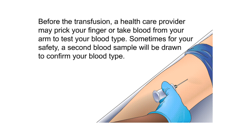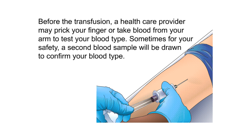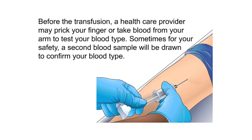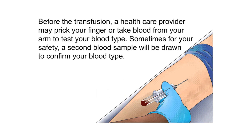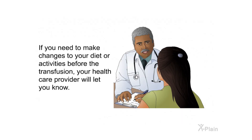Procedure. Before the transfusion, a health care provider may prick your finger or take blood from your arm to test for blood type. Sometimes, for your safety, a second blood sample will be drawn to confirm your blood type. If you need to make changes to your diet or activities before the transfusion, your health care provider will let you know.